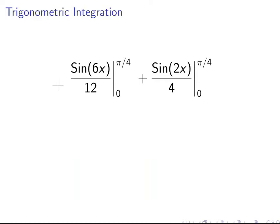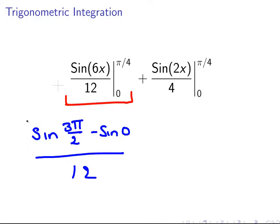So we have, on one side, we will look at this expression here first. That one there. So that is sin 6 times pi over 4. That's 6 pi over 4, or in other words, 3 pi over 2. And minus sin of 0 all over 12. And that is that side.